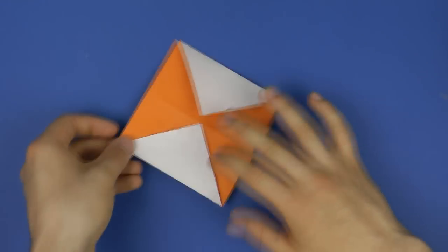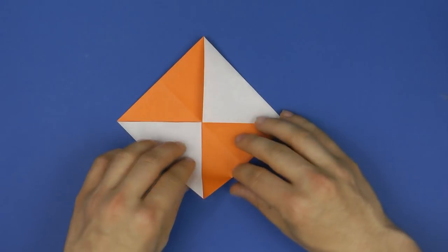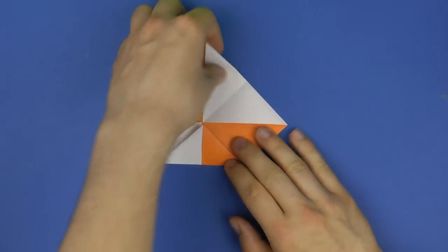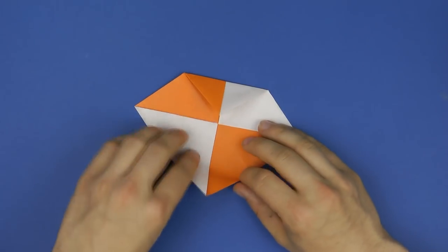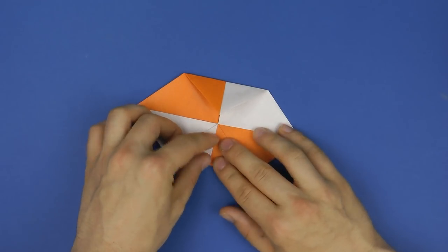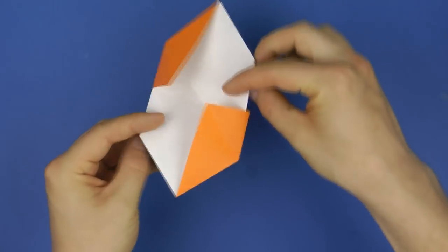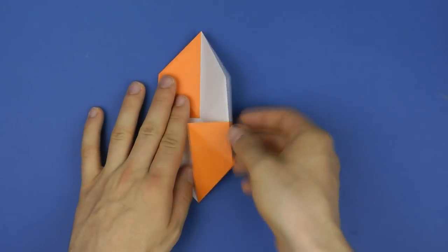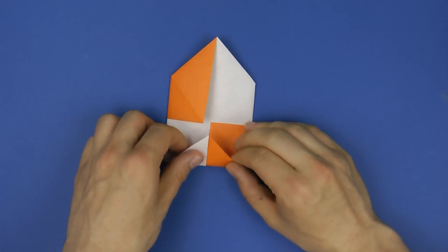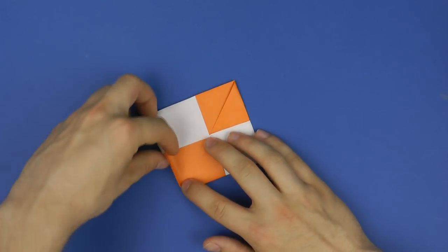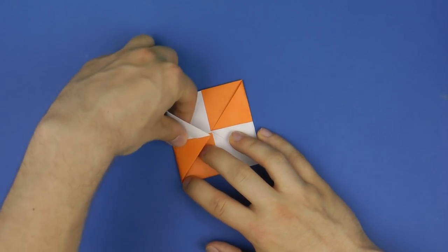And then we repeat this. We fold the two corners that are on opposite sides of each other towards the center. Turn the sheet over and fold the other two opposing corners, corner to the center.